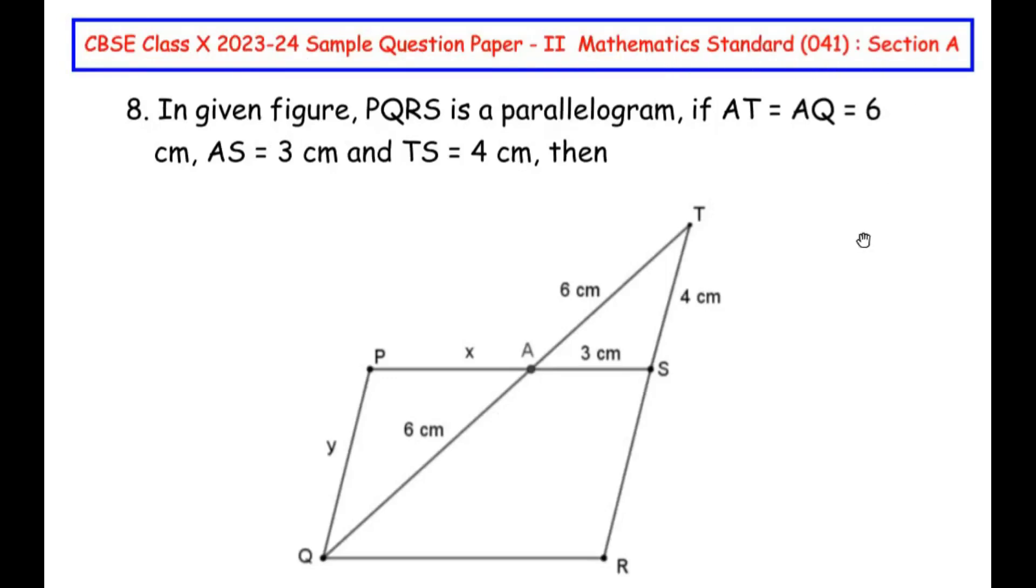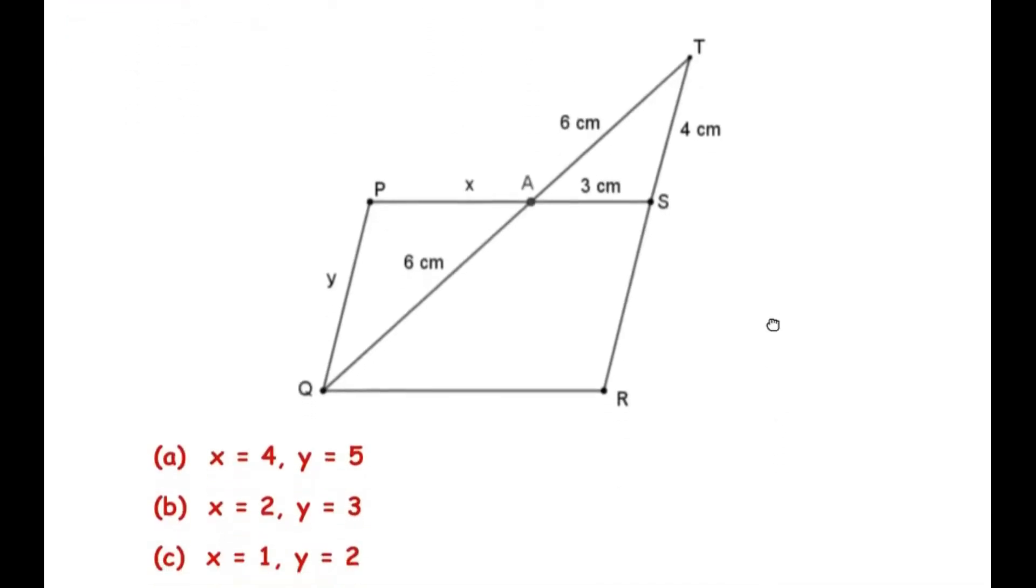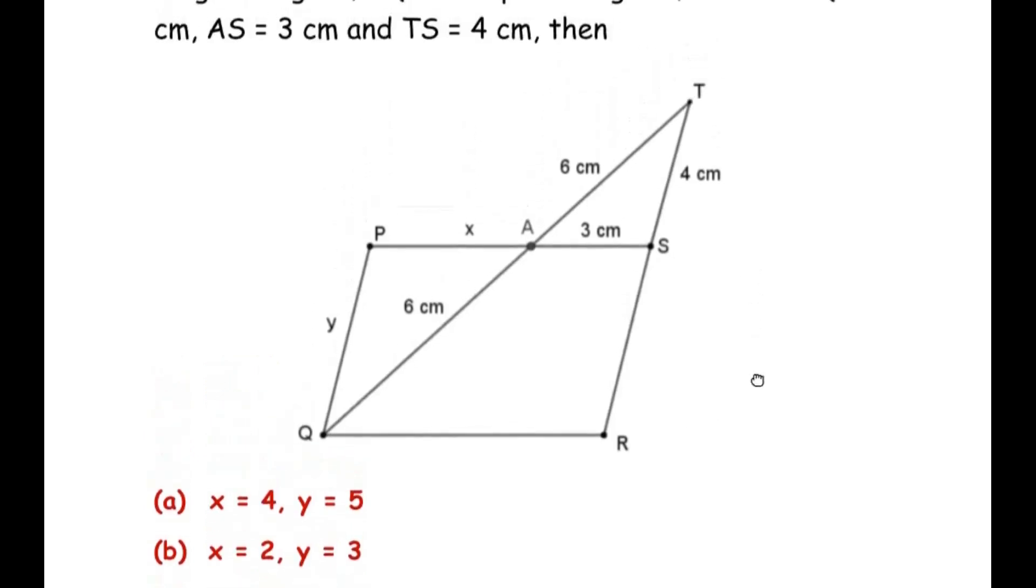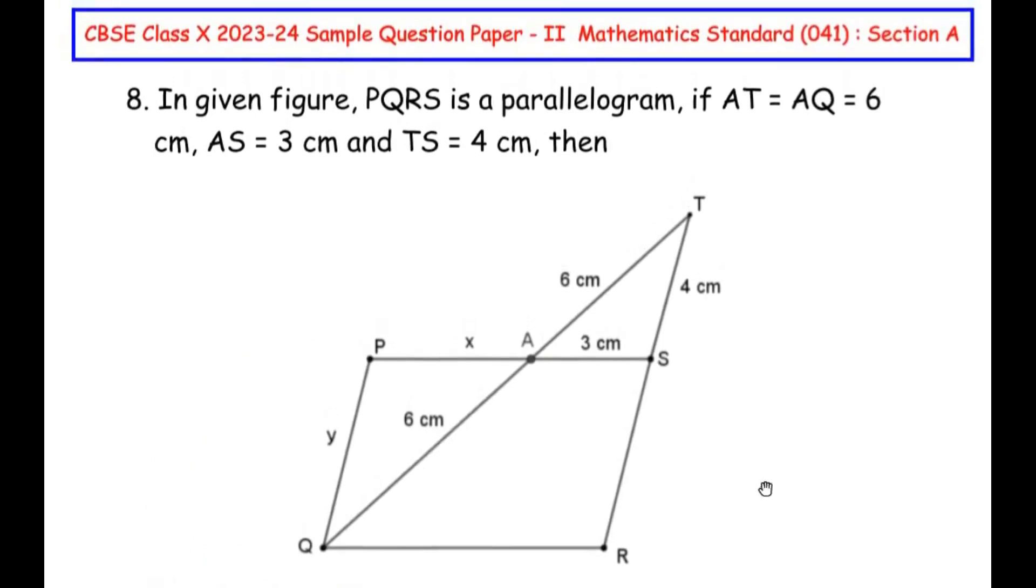Now this question is from the triangles chapter. In given figure, PQRS is a parallelogram. If AT is equal to AQ is equal to 6 centimeter, AS is 3 centimeter and TS is 4 centimeter, then we have to find out the value of x and y. As you can see in the four options, x and y values are given. We need to choose which is the correct option.